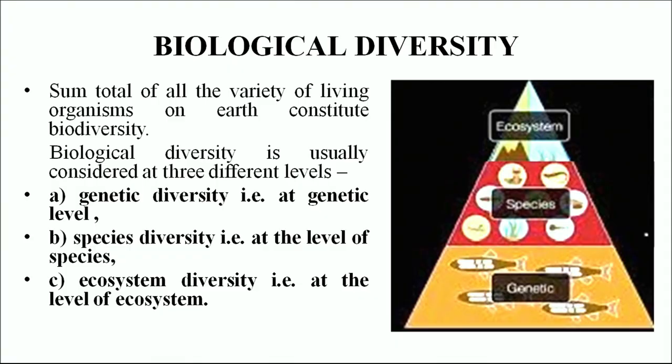We have with us Dr. Padminda Saxena, assistant professor at Dayal Singh College, University of Delhi. Welcome, ma'am. Thank you, Neelam. Learners, now we will start with biological diversity. The sum total of all the variety of living organisms on earth constitutes biodiversity. Biological diversity is usually considered at three different levels: genetic diversity at the genetic level, species diversity at the level of species, and ecosystem diversity at the level of ecosystem.